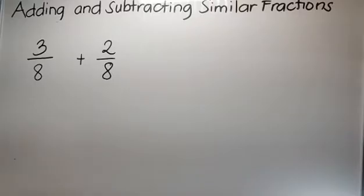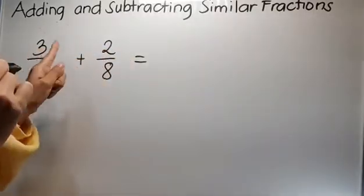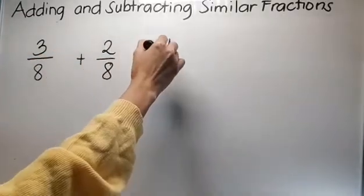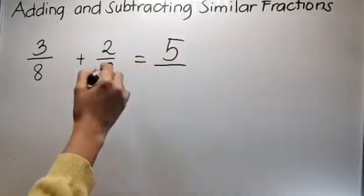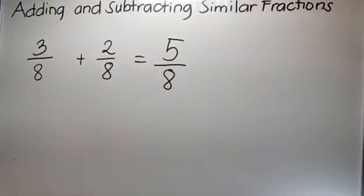So, mabilis lang po at mag-add at mag-subtract ng similar fractions. Yung mag-concentrate ka lang dun sa taas: 3 plus 2 ay 5, and then copy the denominator. So, simple lang siya.